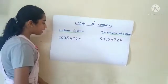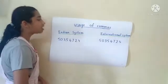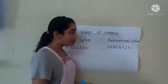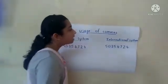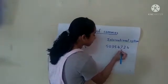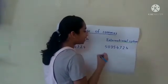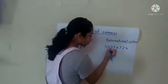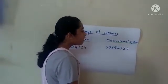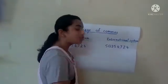The number is 5 Crore 3 Lakh 54,724. In the International System of Numeration, the first comma will come after the hundreds place, and the second comma will come after every 3 digits. We read the number as 50,354,724.